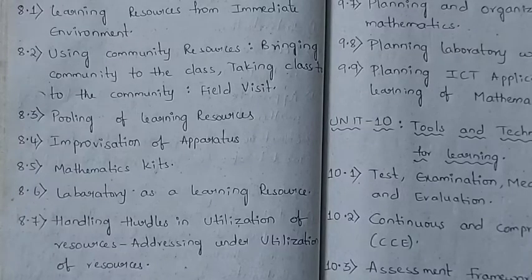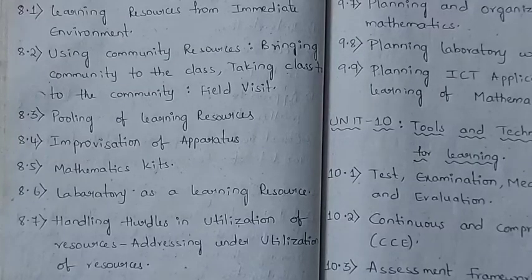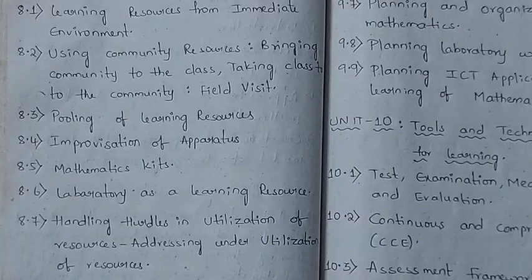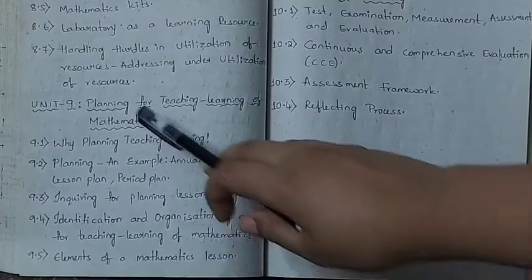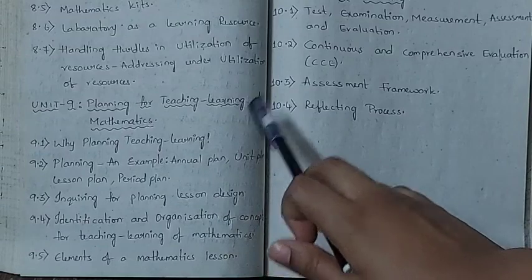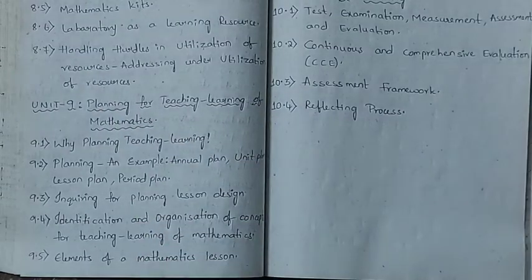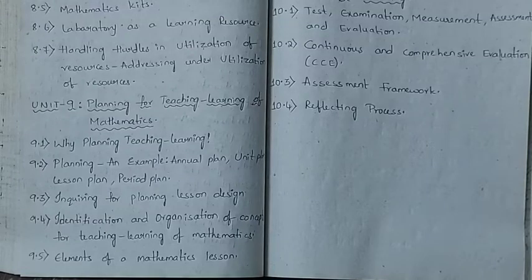So we will find out in 8.7 what to do about underutilized resources — covering learning resources, laboratory as a resource, community resources, and immediate environment as a resource. Unit 8 has 7 subtopics in total. Unit 9 is Planning for Teaching Learning of Mathematics — how to plan the teaching-learning process.